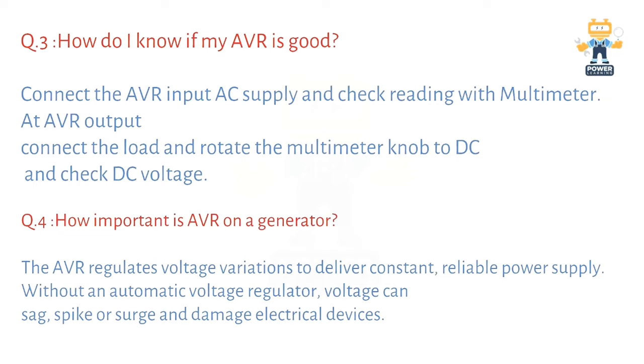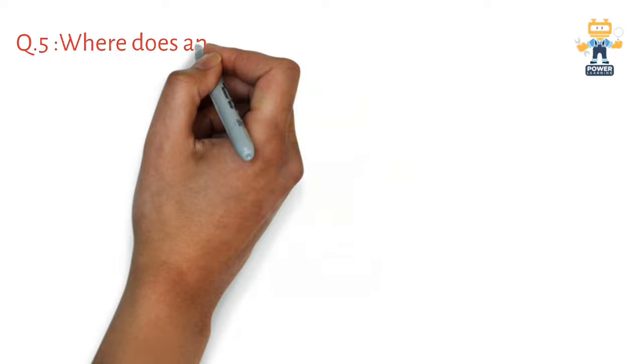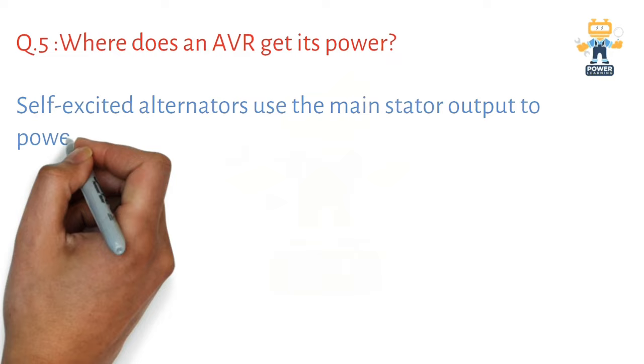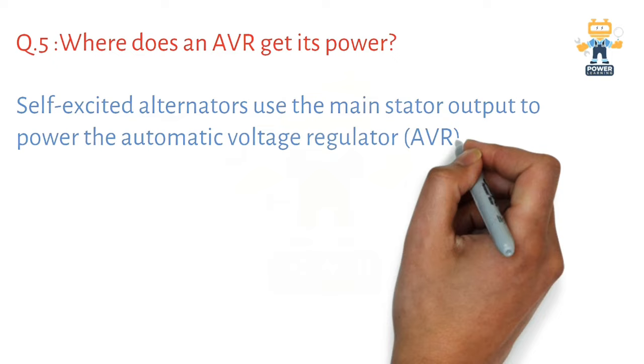Question number five: Where does an AVR get its power? Self-excited alternators use the main stator output to power the automatic voltage regulator AVR and provide power to the excitation system.